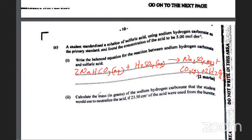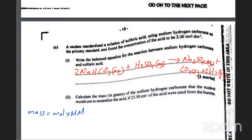The question asks for the mass in grams of sodium hydrogen carbonate needed to neutralize the acid if 23.5 cm³ of the acid were used. To get the mass, we know that mass equals moles times molar mass. But first you must find the moles of sulfuric acid, since you have its concentration and volume — multiply the two to get the number of moles.